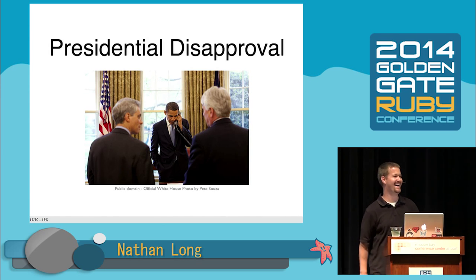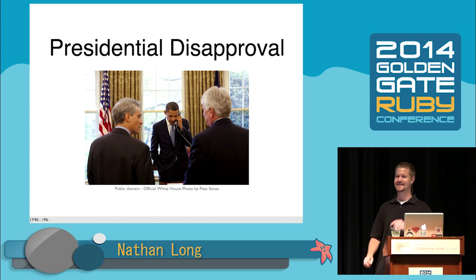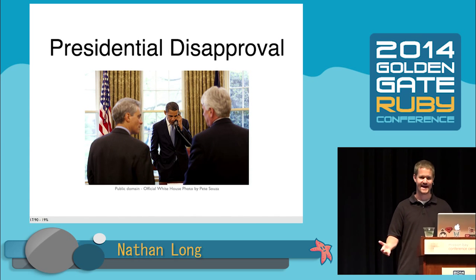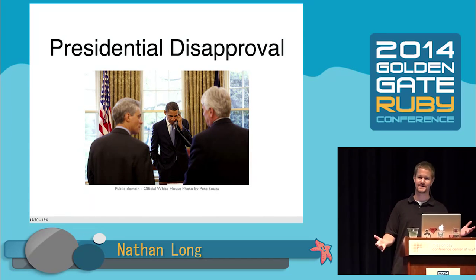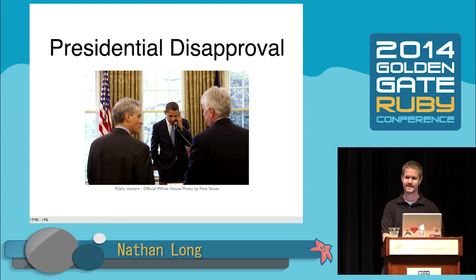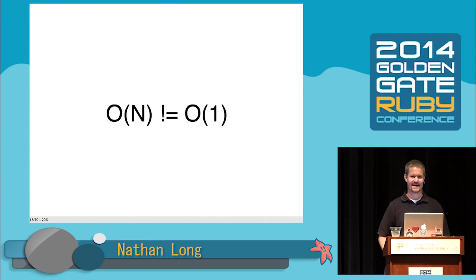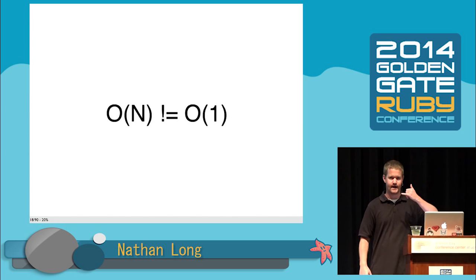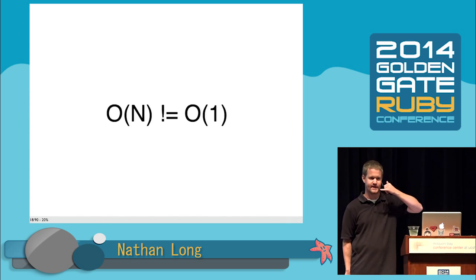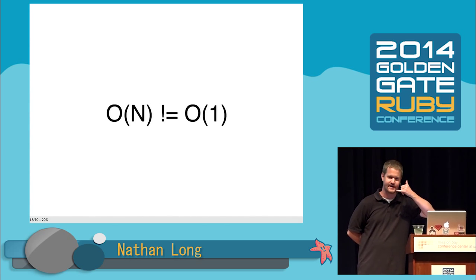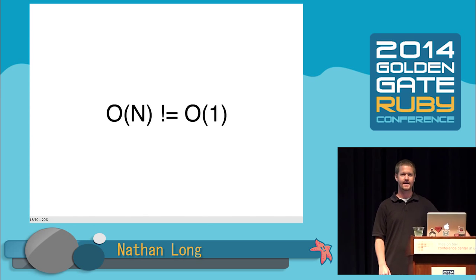I got a call back from the president, and he said, what kind of hash is this? A hash is supposed to have O(1) lookup time, and this thing has O(N). I said, I'm having some trouble hearing you, Mr. President. I'll call it — what does that mean?